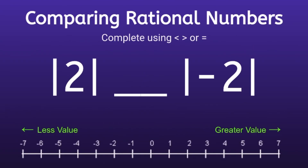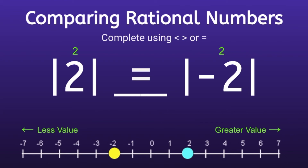Alright, back to the problem. We want to find the absolute value of positive 2 and find the absolute value of negative 2. So first let's graph these numbers. We'll start with the negative 2. Negative 2 is 2 spaces away from 0, so the absolute value of negative 2 is positive 2. The positive 2 is also 2 spaces away from 0, so the absolute value of positive 2 is positive 2. Both sides will be equal to positive 2, so this one will have an equal sign.